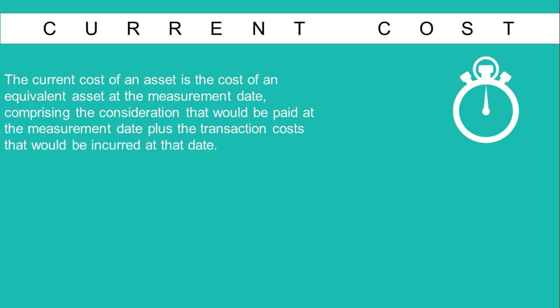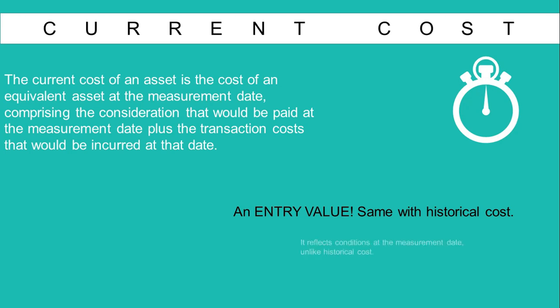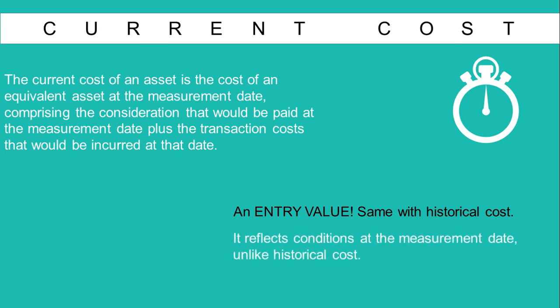The current cost of an asset is the cost of an equivalent asset at the measurement date, comprising the consideration that would be paid at the measurement date plus the transaction costs that would be incurred at that date. Current cost and historical cost are similar in that they are both entry values — values of an acquisition — as contrasted with fair value and value in use, which are exit values that consider the eventual disposal of the asset or liability. However, current cost differs from historical cost in that it reflects conditions at the measurement date.